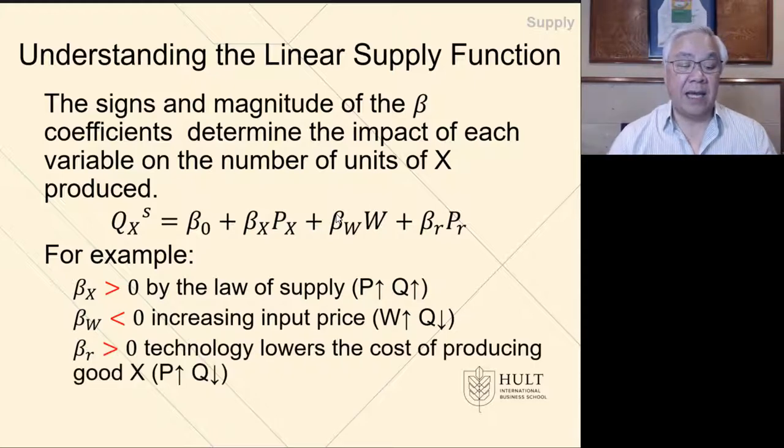The other factor is beta sub R, which is for PR. This technology may lower the cost of production such that if we have increasing production, we will have decreasing quantity because our quantity was reduced. So as beta goes up, that would increase the quantity that we sell.